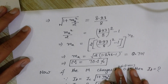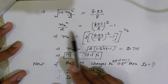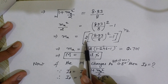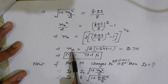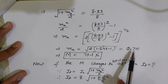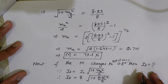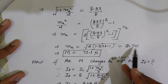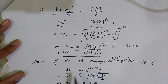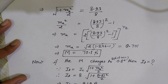Solving, I get 1 + ma² / 2 = (8.93 / 8)². Working through the steps, ma² / 2 is calculated, and ma comes out to be 0.701. This is the modulation index for amplitude modulation. To calculate the percent modulation, I multiply by 100, giving a percent modulation of 70.1%.